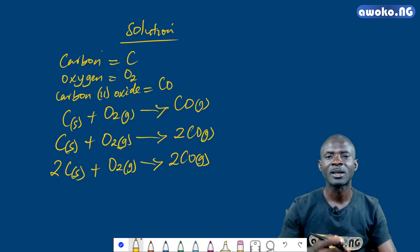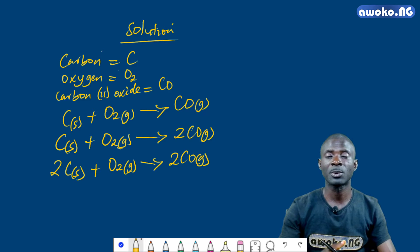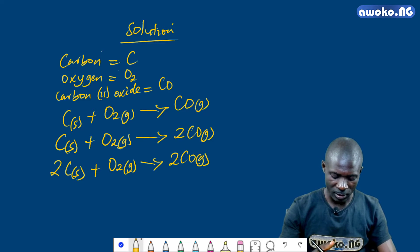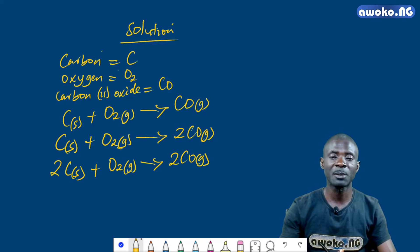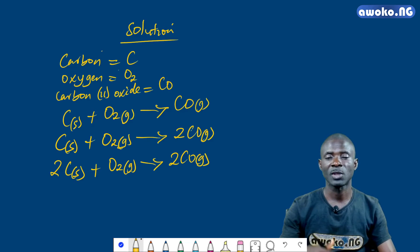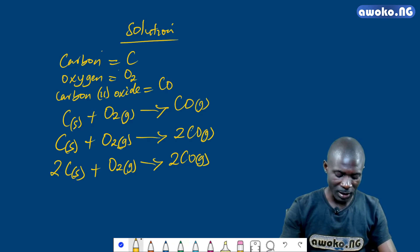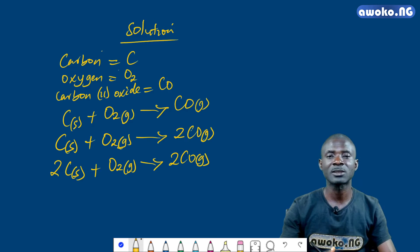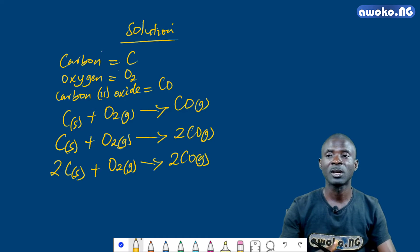This is the required chemical equation for the combustion of carbon in oxygen to produce carbon monoxide. It indicates the actual number of moles of both elements and the number of atoms of individual elements present in the equation. It is a balanced equation, and a balanced equation obeys the law of conservation of matter, which states that matter can neither be created nor destroyed in the course of a chemical reaction.